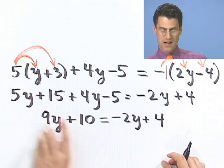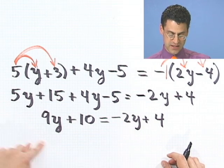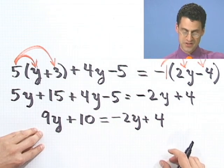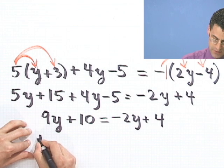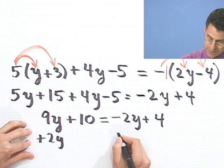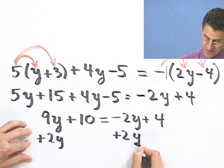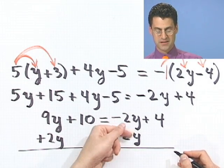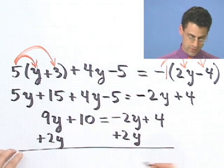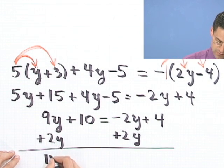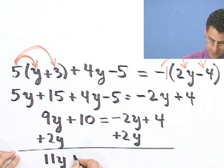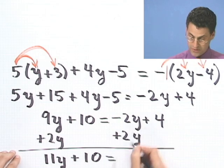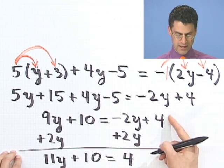Now I'll bring all the y's on the same side by, let's see, I'll move this to this side. And by moving it, I've got to actually change the sign. Or another way of thinking about it is I'm going to add 2y to both sides. How do I know I have to add 2y? Well, because I'm subtracting it here and I want these to cancel out. So I do the opposite of whatever I'm doing to move it over. Here I'm going to have 11y plus 10 equals, and these cancel out, and I'm just left with the 4. Great.